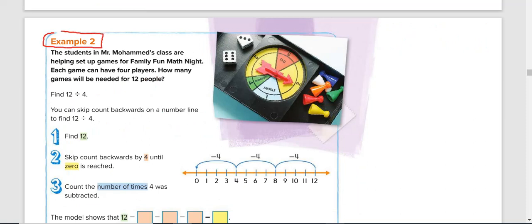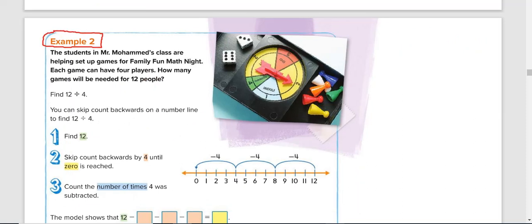Let's check if you are correct. The students in Mr. Mohammed's class are helping set up games for Family Fortune night. Each game can have 4 players. How many games will be needed for 12 people?